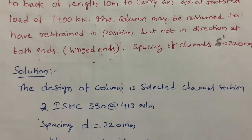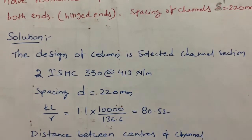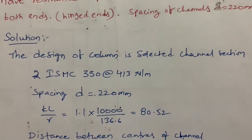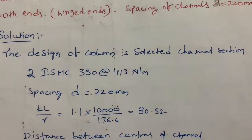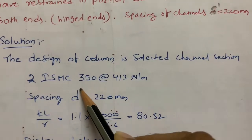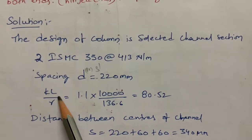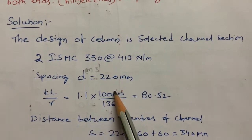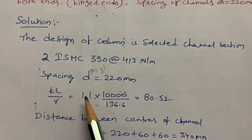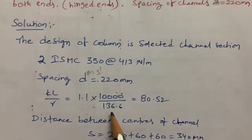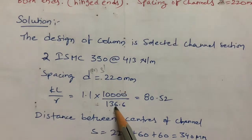For the solution, I am choosing the channel section ISMC 350 at 413 N/m, which is available in the steel tables book. I choose two ISMC channels. The spacing between channels 'd' is 220 mm. Now I find the slenderness ratio KL/r: that is 1.1 (the k value) into 10,000 mm (length given in question), divided by 136.6 (the r value for ISMC 350 from steel tables), giving 80.52.